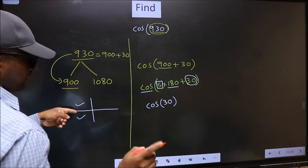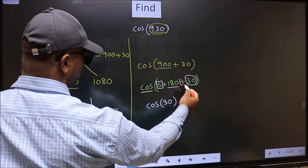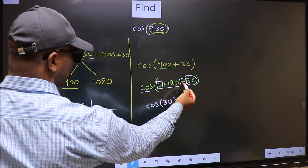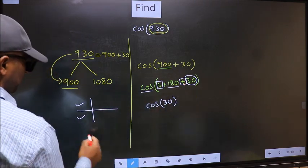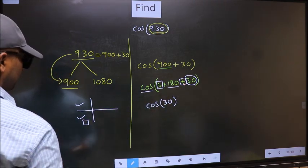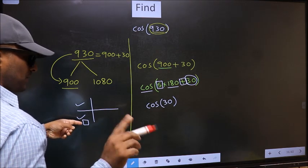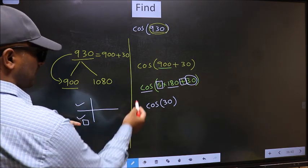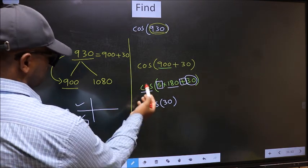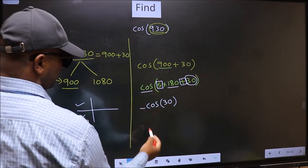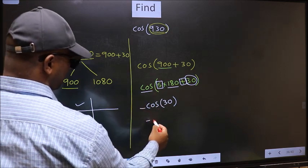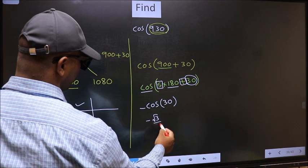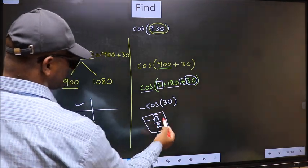So now, to select the quadrant, we should look at this symbol. Here we have positive. That means the angle lies in the third quadrant. And in the third quadrant, cos is negative. So we should put negative. So negative cos 30 is root 3 by 2. This is our answer.